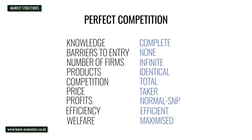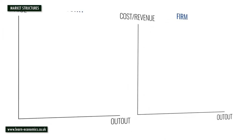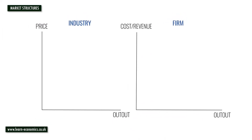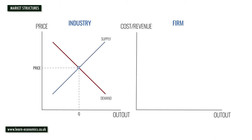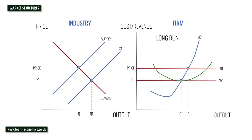Firms operating under conditions of perfect competition take their price from the whole market or industry. In the short run, supernormal profits are possible. However, supernormal profits encourage new entrants, shifting industry supply and pushing down price.